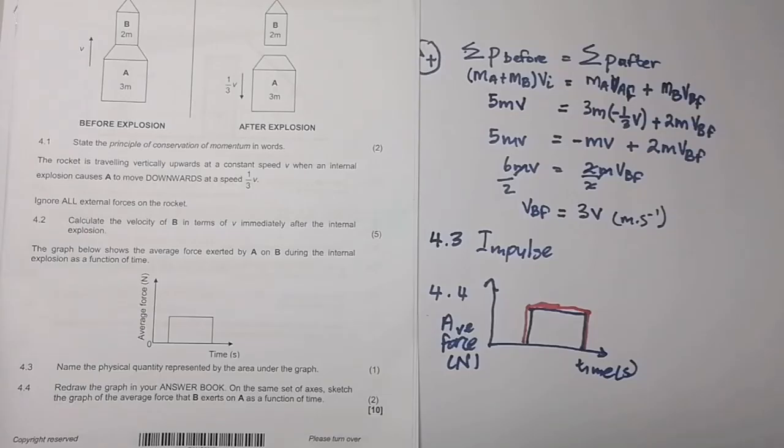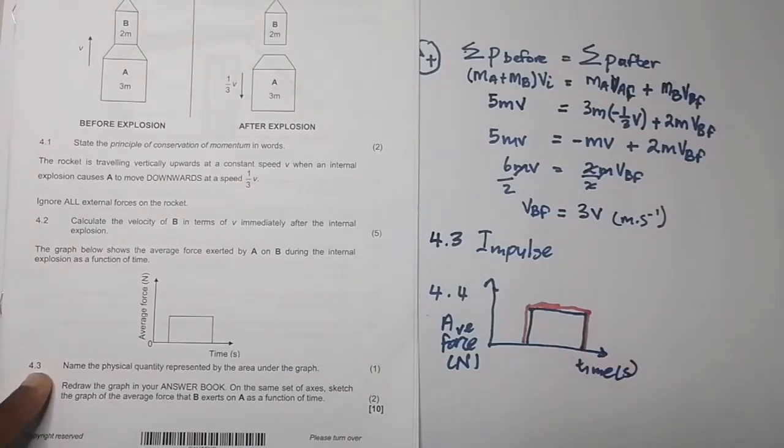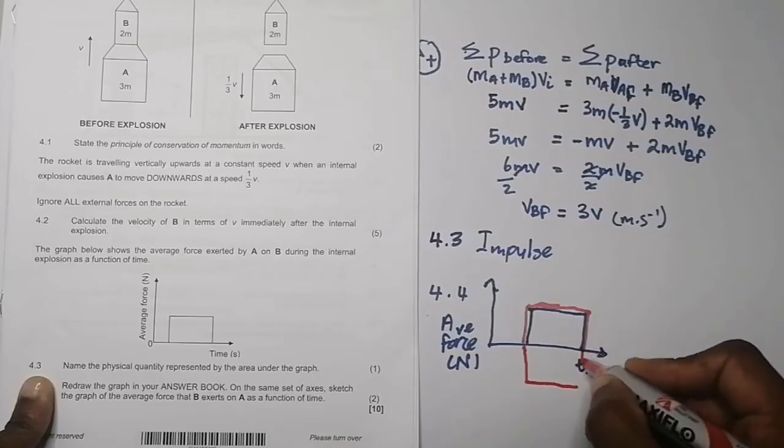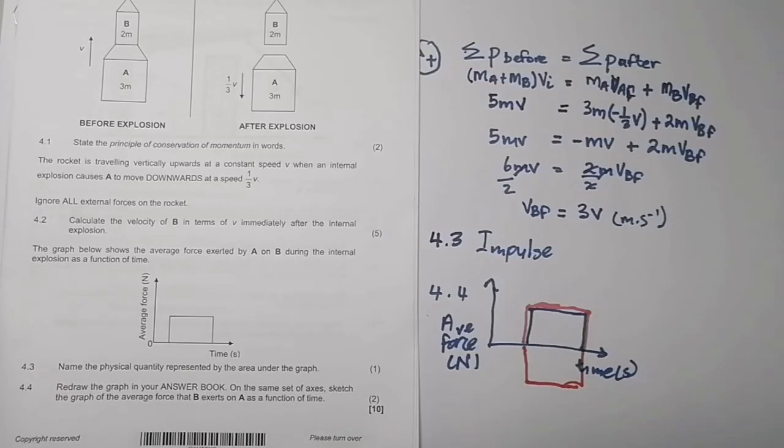What would the impulse, or rather the force that B exerts on A, look like? I'm going to draw this in a different color, red in this case. The graphs would actually be exactly the same. Why would that be the case? Because the force that A exerts on B is equal to the force that B exerts on A.